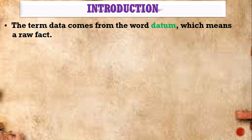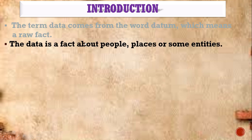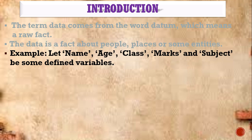Introduction. The term data comes from the word 'datum', which means a raw fact. In the first chapter, we studied about data and information. Data is unprocessed details which can be processed by the computer to get information. Data is a fact about people, places, or some entities. We store all these data into a variable. A variable is the storing place.